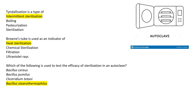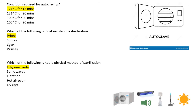Next: which of the following is used to test the efficacy of sterilization in an autoclave? Options are Bacillus cereus, Bacillus pumilus, Clostridium tetani, and Bacillus stearothermophilus. The correct option is Bacillus stearothermophilus — its spores are used to test autoclave efficacy.